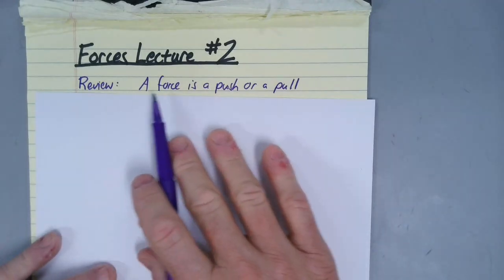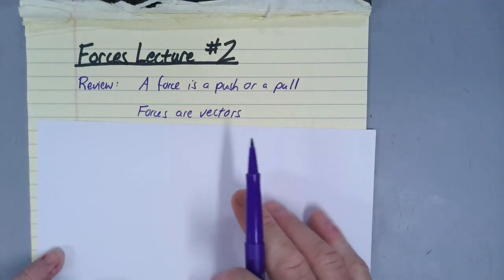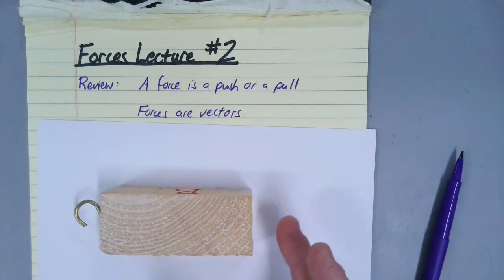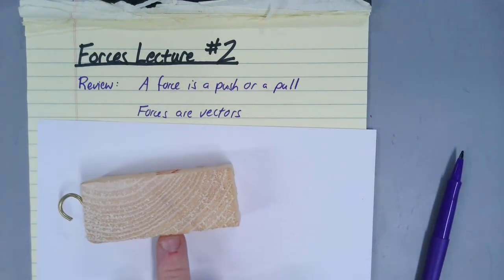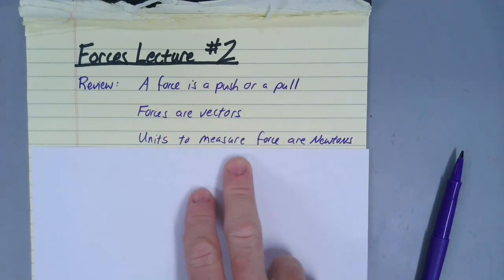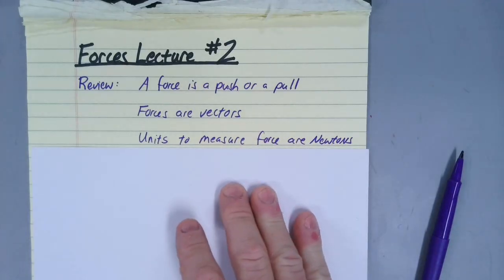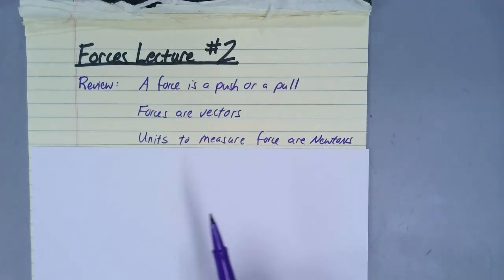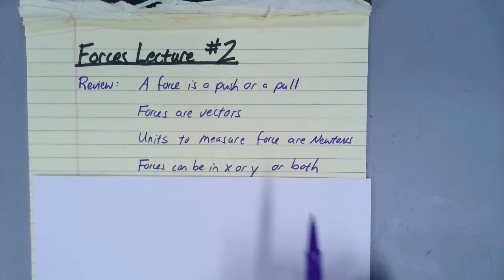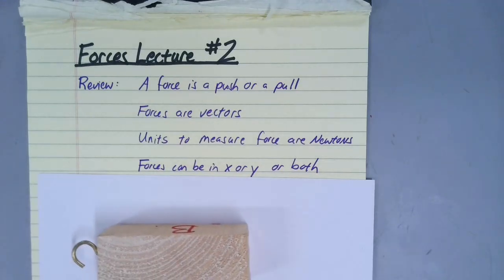We know that a force is a push or a pull, and that has to be a vector because in order to push or pull on something you have to push or pull in a certain direction. We understand that the units to measure force are newtons, and tied to that is the fact that when we measure the mass of something to calculate its weight it must be in kilograms.